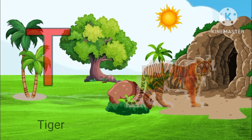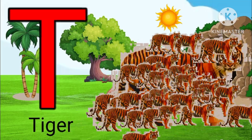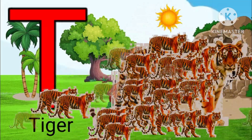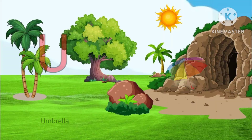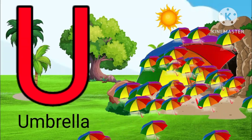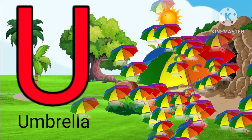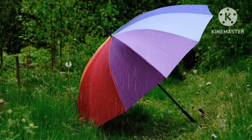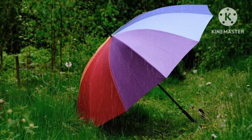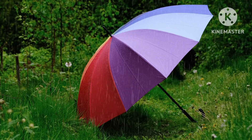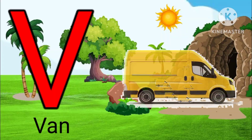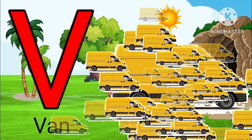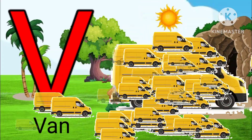T for Tiger, U for Umbrella, V for Veil.